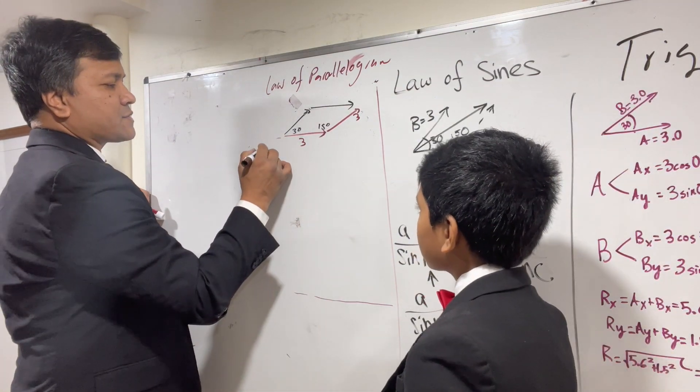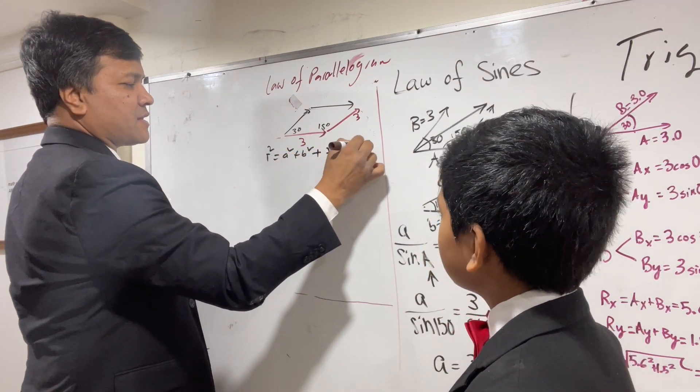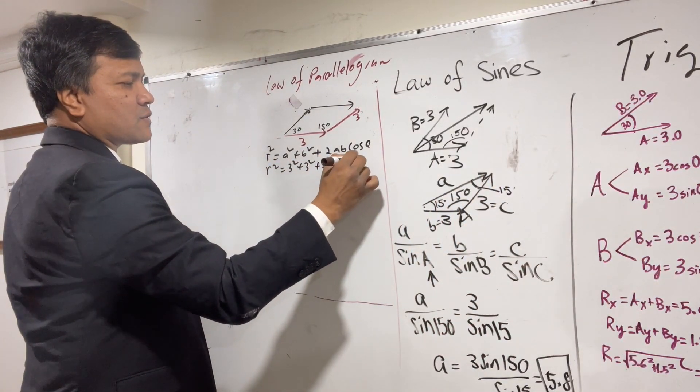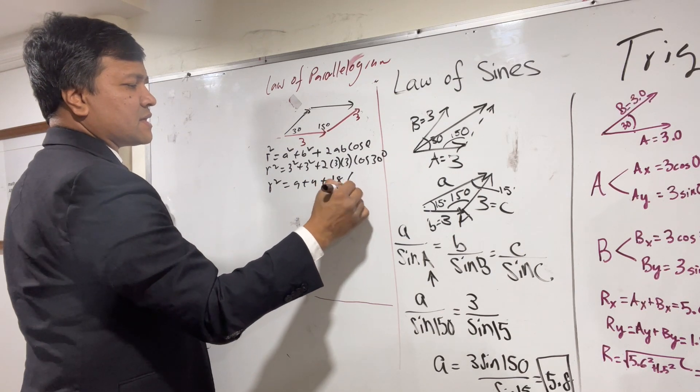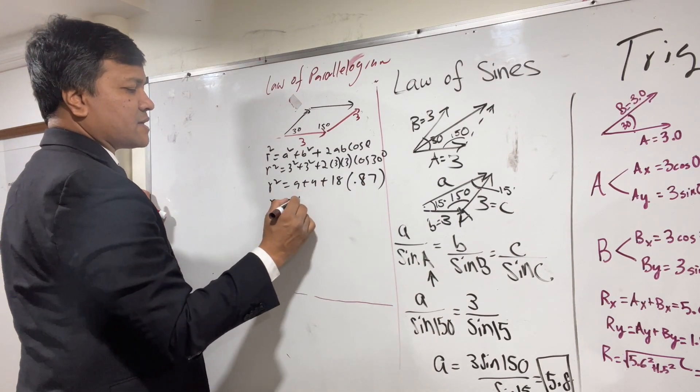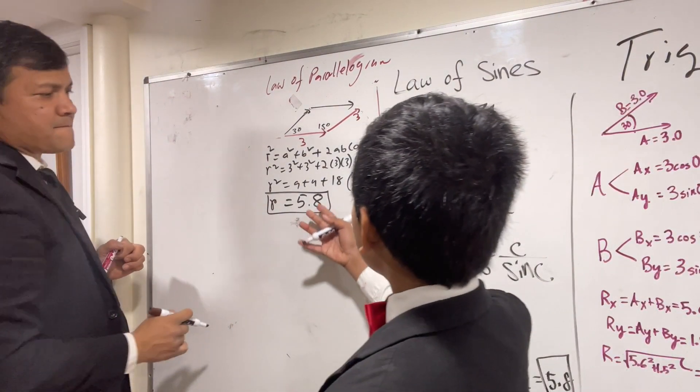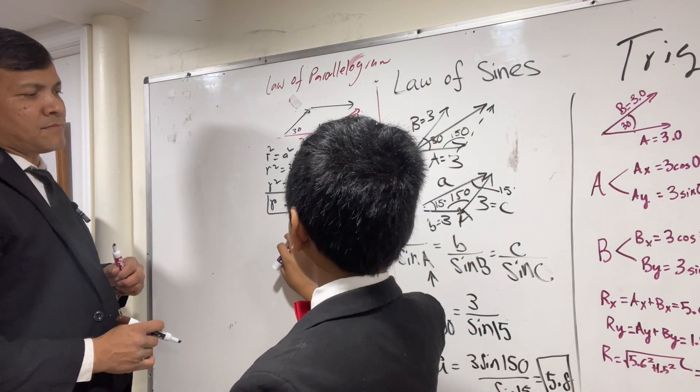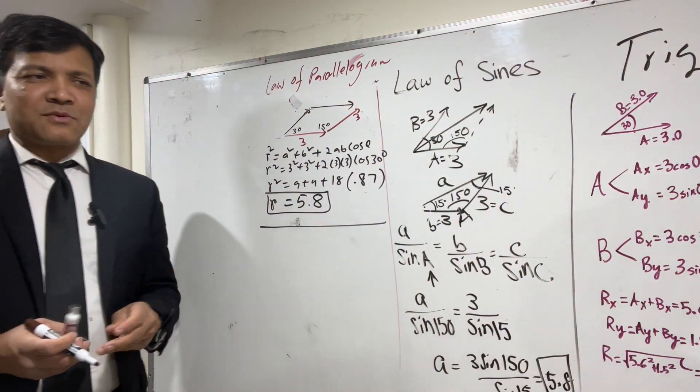So now we're going to have r squared is equal to a squared plus b squared plus 2ab cosine theta. So r squared is equal to 3 squared plus 3 squared plus 2, 3, 3 cosine 30. So r squared is equal to 9 plus 9 plus 18 cosine 30 is 0.86. So r is 5.8. Wait, how is 18 plus a positive number 5.8? Oh. That was not a dumb question. No question is a dumb question.